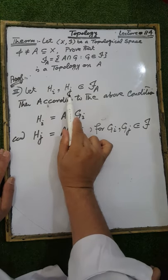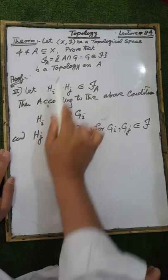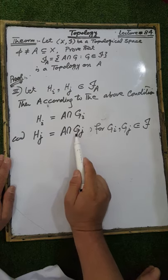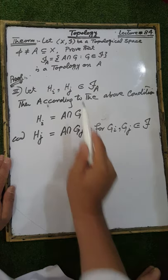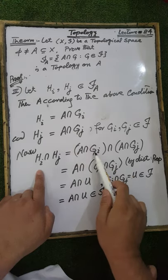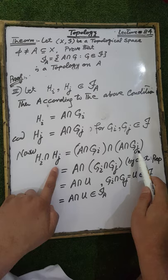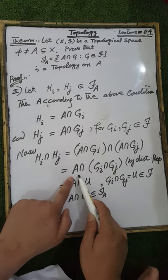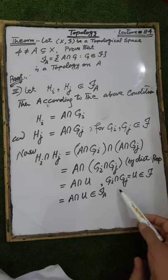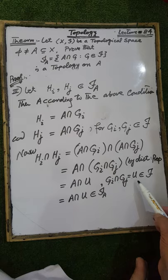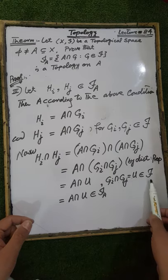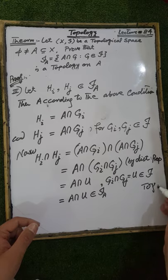To check the third condition, let H_i and H_j be any two elements of τ_A. Then H_i = A ∩ G_i and H_j = A ∩ G_j, where G_i and G_j are elements of τ. Now H_i ∩ H_j = (A ∩ G_i) ∩ (A ∩ G_j), which by the distributive property equals A ∩ (G_i ∩ G_j). Since G_i and G_j are elements of τ, their intersection G_i ∩ G_j is also an element of τ, call it U.